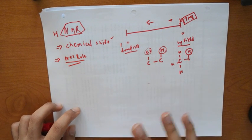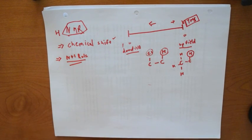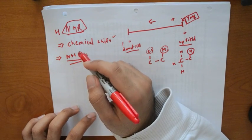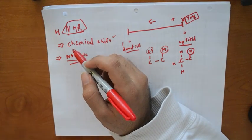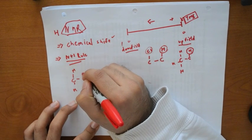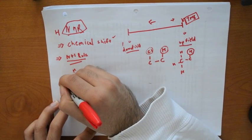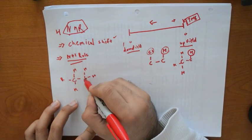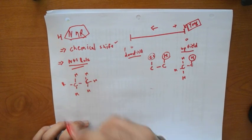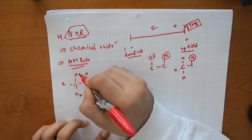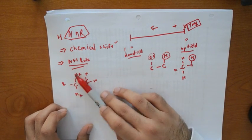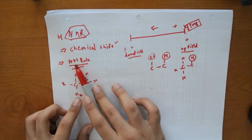Students tend to get caught up on how to apply the N plus one rule. What it tells you is how many peaks — or splitting patterns — you'll see on your NMR for each set of hydrogens. First, we identify equivalent hydrogens, meaning hydrogens in identical environments. These equivalent hydrogens do not split each other, so they don't factor into the N plus one rule. The rule applies up to three bonds away.